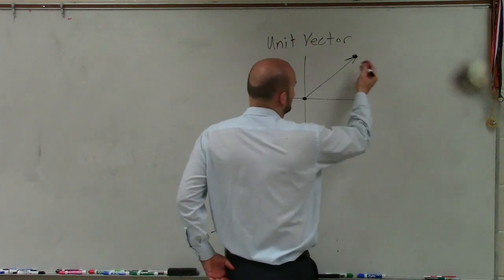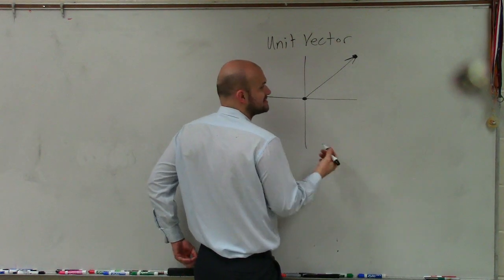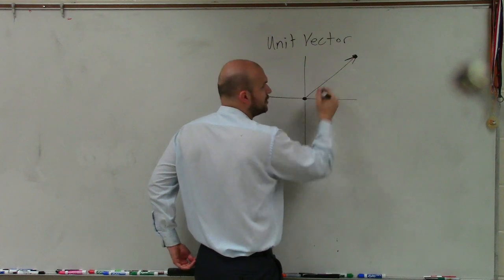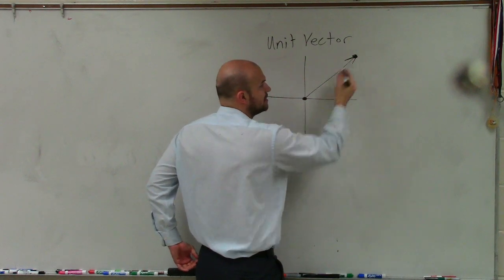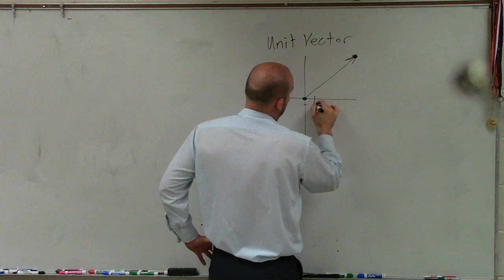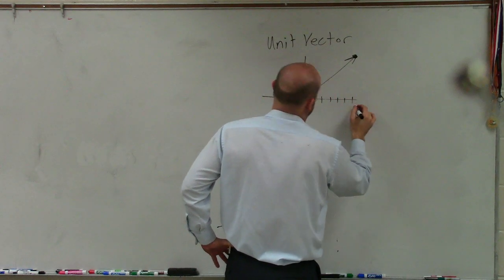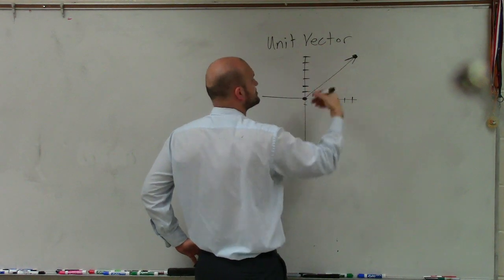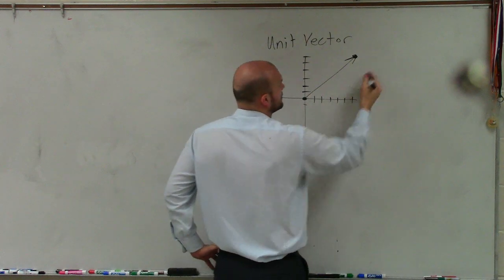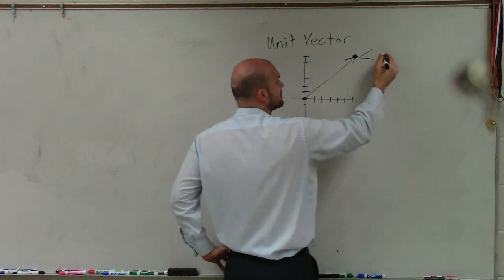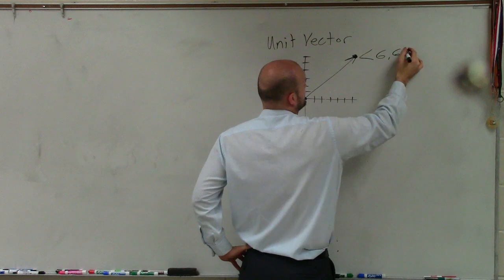Well, to find that, again, our magnitude, we can look at finding the actual coordinates of our vector, which in this case, it'd be 1, 2, 3, 4, 5, 6, and then 1, 2, 3, 4, 5, 6. So this vector has 6 and 6. So what we'd write is our slanted parentheses, so 6, 6.